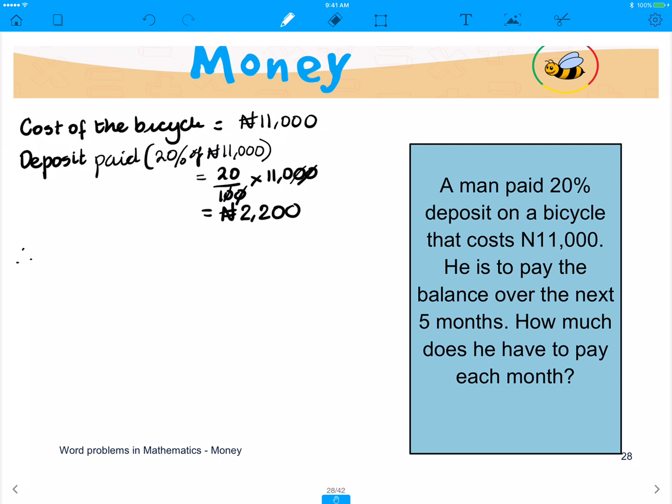So it means that, therefore, the balance outstanding, the amount that is remaining after paying the deposit, will be 11,000 minus 2,200, which will give us 8,800 Naira.